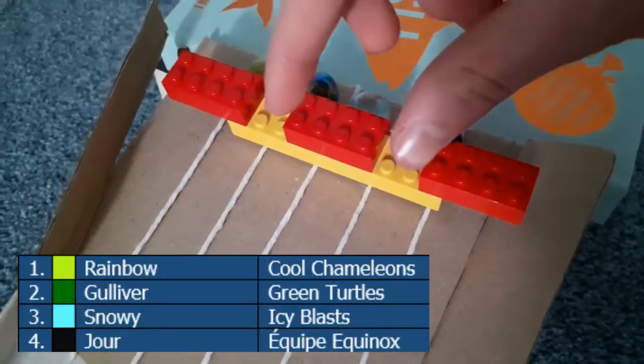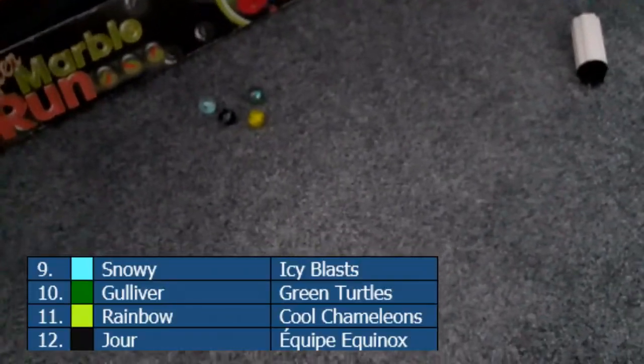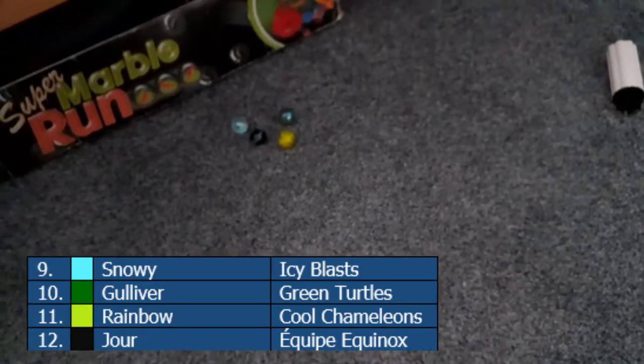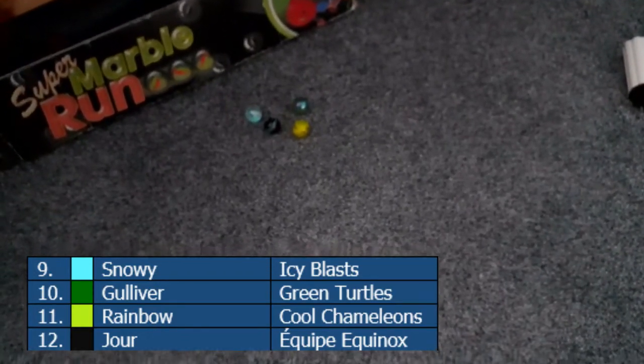Colgate Club, Green Turtles, Icy Blast, and Equipe Equinox. And they're off. It's Icy Blast ahead of Green Turtles, Cool Chameleons, and Equipe Equinox. Now, potentially, the pre-qualifiers not doing so well so far, the three of them in this race alone.